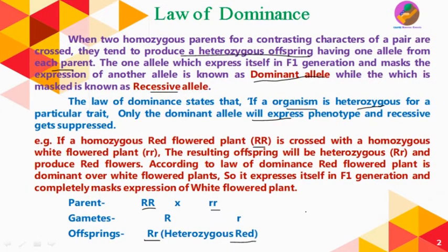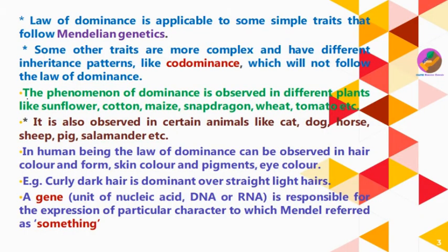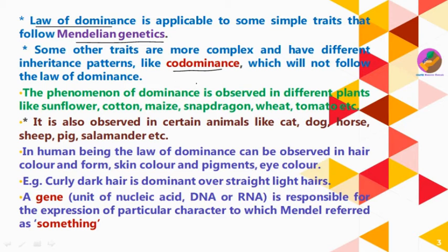The Law of Dominance is applicable to some simple traits that follow Mendelian genetics — it is not applicable to all types of traits. Some traits are more complex and have different inheritance patterns, like codominance, which does not follow the Law of Dominance. Similarly, incomplete dominance also does not follow the Law of Dominance. There are complex phenomena in genetics for which the Law of Dominance is not applicable.